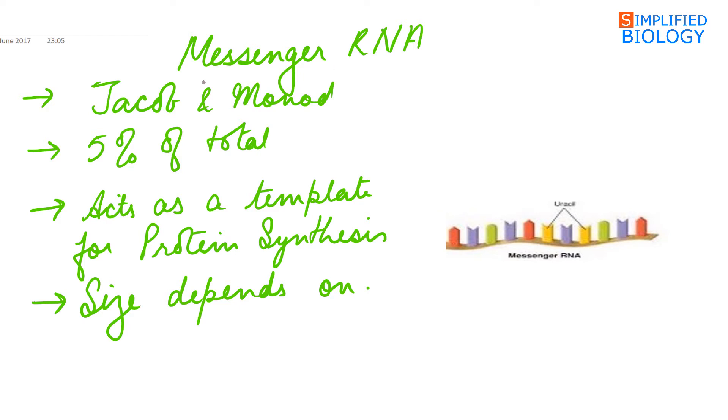Messenger RNA, as the name shows, carries the message or the information of arrangement of amino acids in a polypeptide chain. The term messenger RNA was given by Jacob and Monod, and it constitutes 5% of the total RNA. It acts as a template for protein synthesis. Meaning, the linear arrangement of nitrogenous bases in messenger RNA dictate the linear arrangement of amino acids in a polypeptide chain, where three bases code for one amino acid, and this three base sequence is known as a codon.